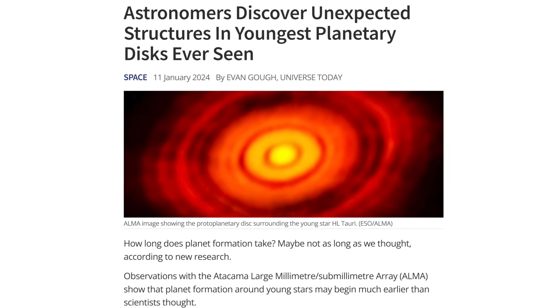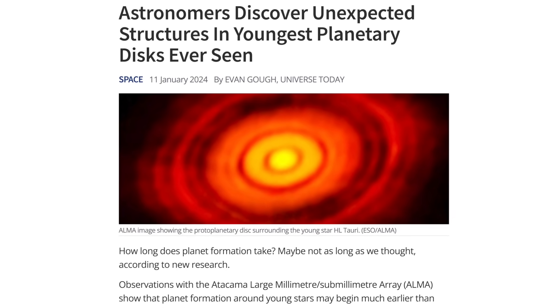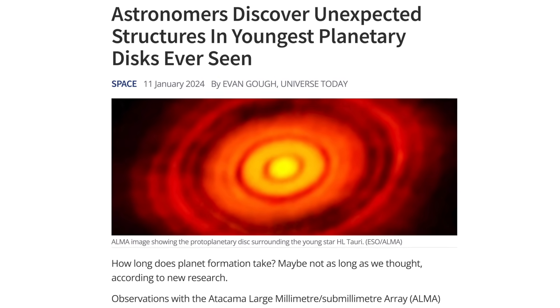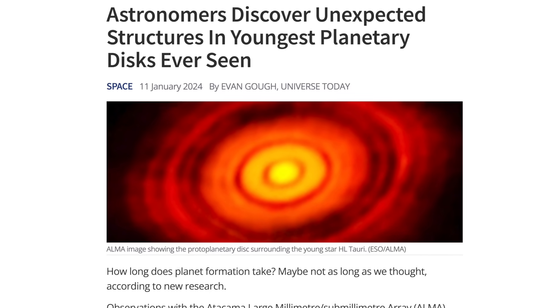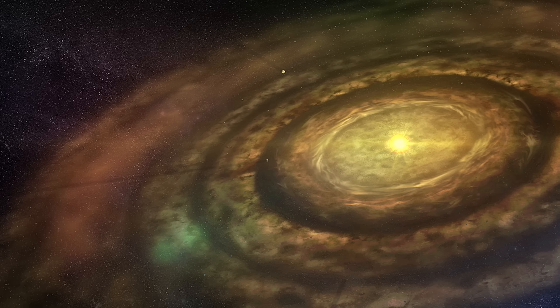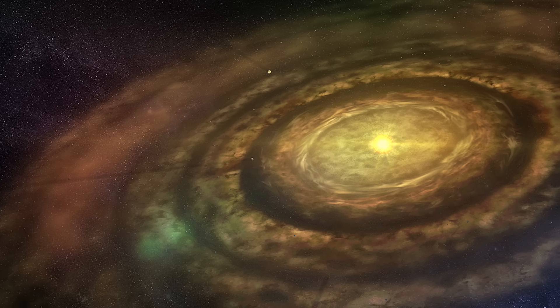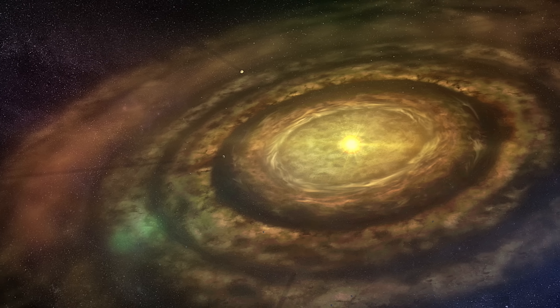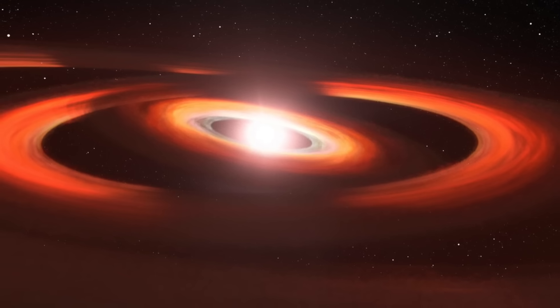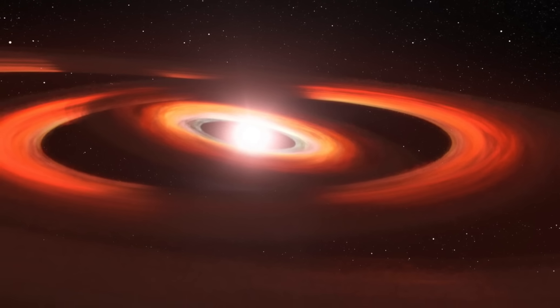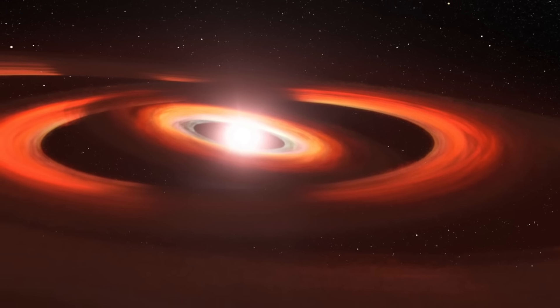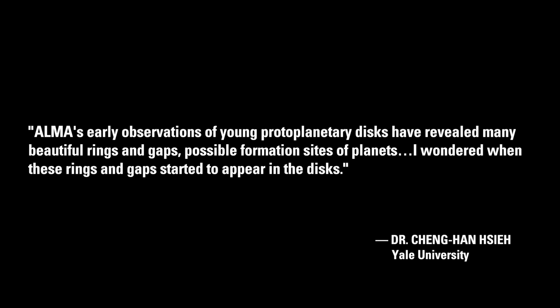Scientists studying data from the European Southern Observatory's ALMA telescope have discovered evidence of shockingly early planet formation in the disk about a so-called protostar. A Ph.D. candidate at Yale University named Dr. Cheng Han Hsieh made the discovery in an effort to determine at how early a stage planet formation begins about a star. He stated, ALMA's early observations of young protoplanetary disks have revealed many beautiful rings and gaps, possible formation sites of planets. I wondered when these rings and gaps started to appear in the disks.